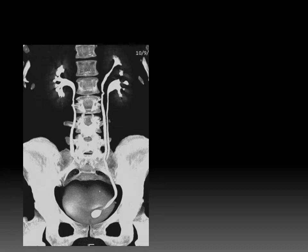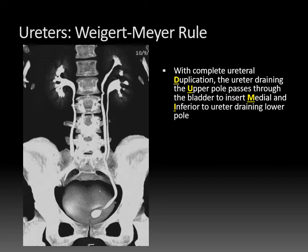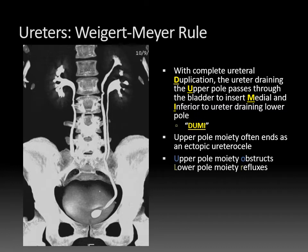Looking at a different case — an excretory phase coronal MIP reformat — the right kidney has a normal collecting system with a single ureter, but the left kidney has a duplicated collecting system and two ureters. When we have complete ureteral duplication, the Weigert-Meyer rule applies: the ureter draining the upper pole moiety passes through the bladder to insert medial and inferior to the ureter draining the lower pole — remember this with the mnemonic DUMI. Usually the upper pole moiety ends as an ectopic ureterocele, seen here as a dilated region of the distal ureter with a cobra head or spring onion appearance. The upper pole moiety tends to obstruct, whereas the lower pole moiety tends to reflux — upper obstructs, lower refluxes.